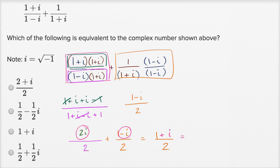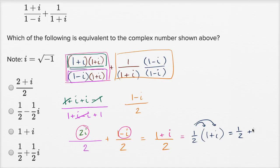We can view this as one half times (1+i), which is the same thing. Or if we distribute the one half, we get one half plus one half i. When we write it that way, we see this matches the answer choice exactly. And we are done.